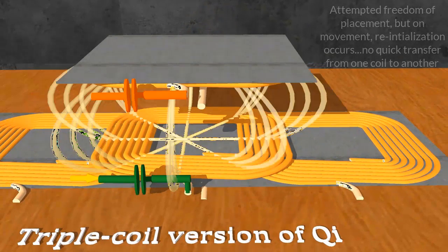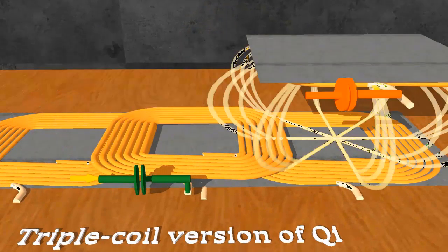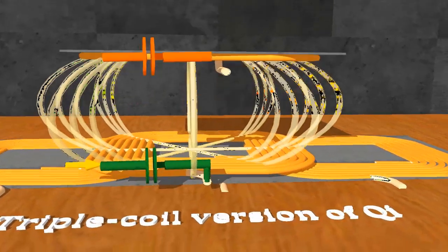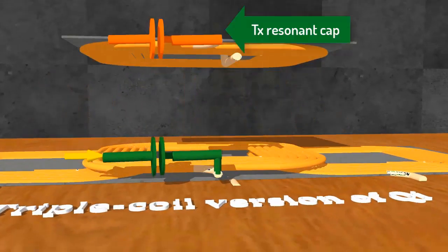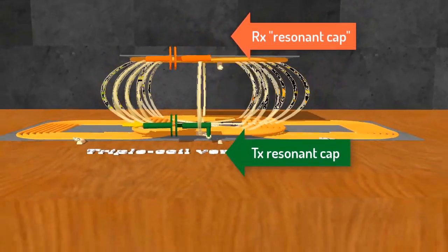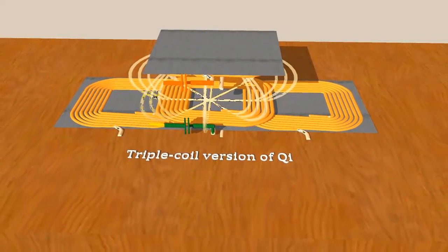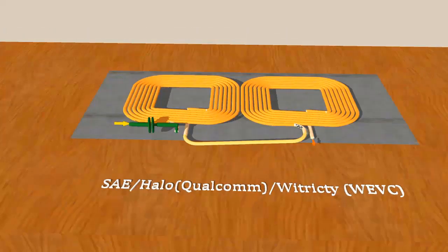In fact, it's not smooth because if you move it, it re-initializes and has to start up and find the best coil again. Both receiver and transmitter tuned to 100 kHz—another mistake—but it kind of works.